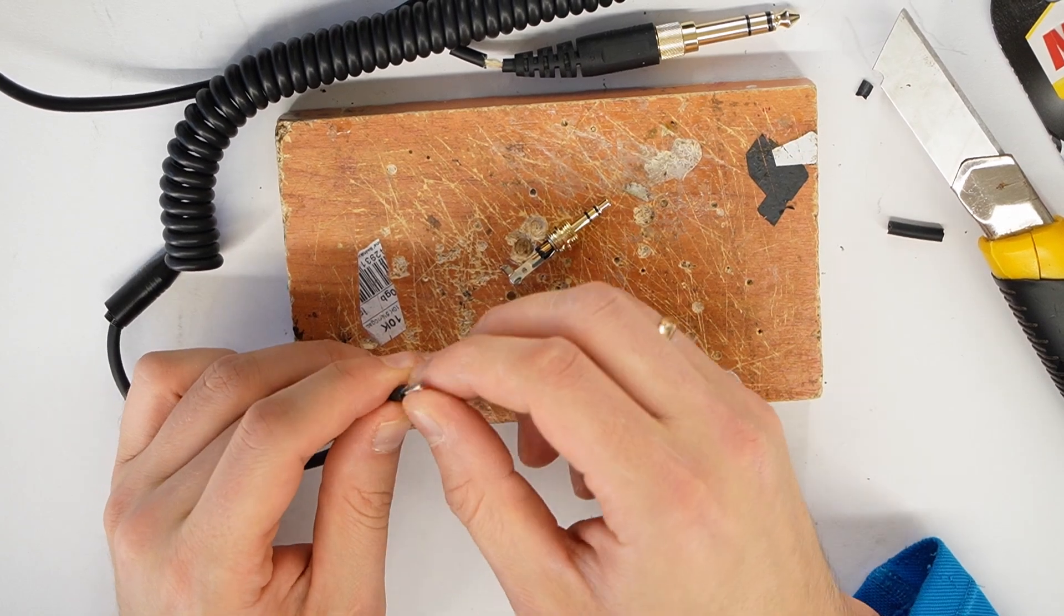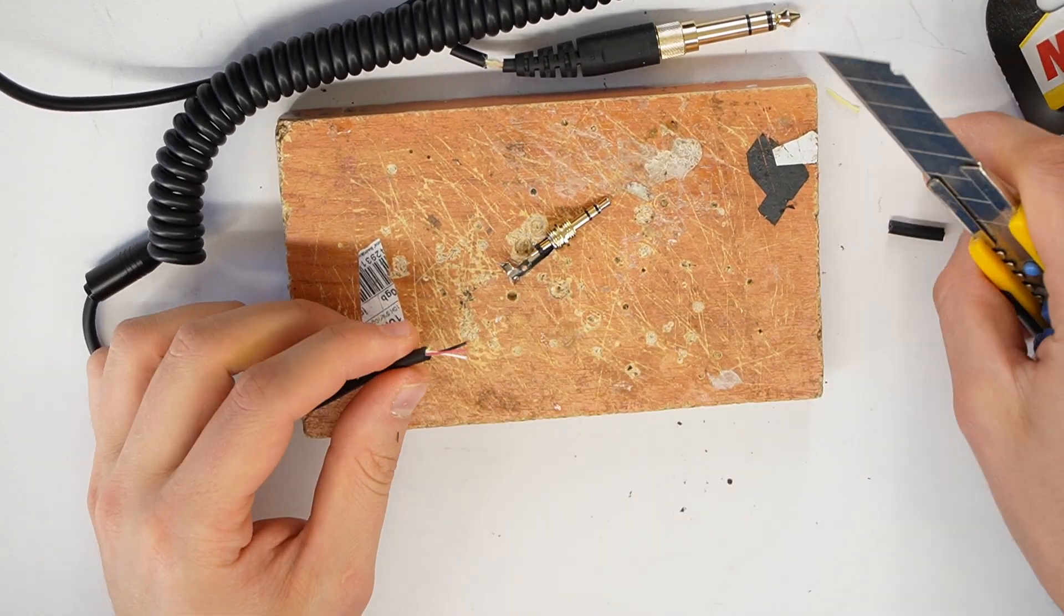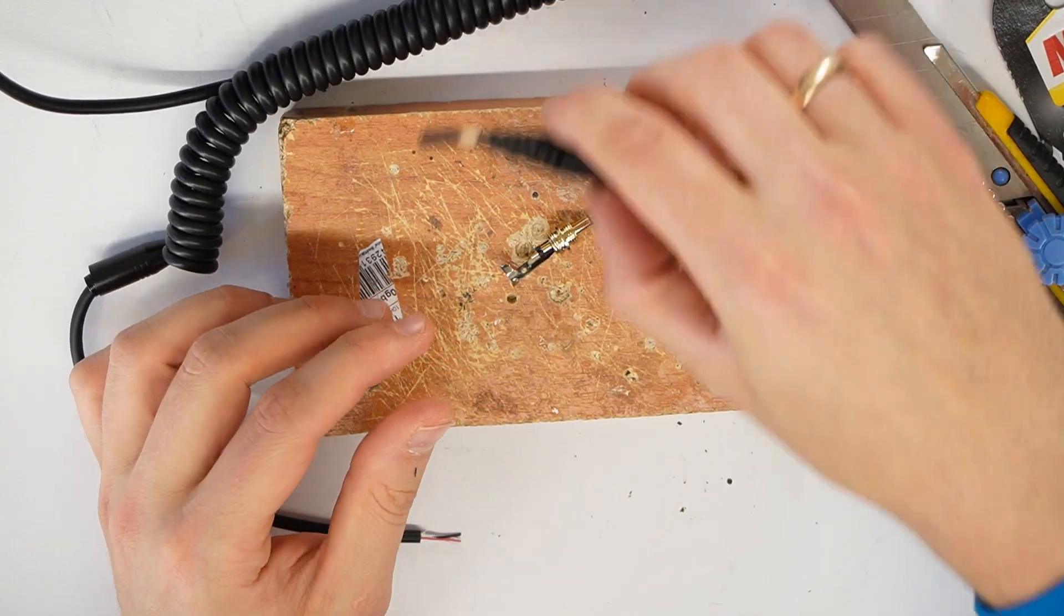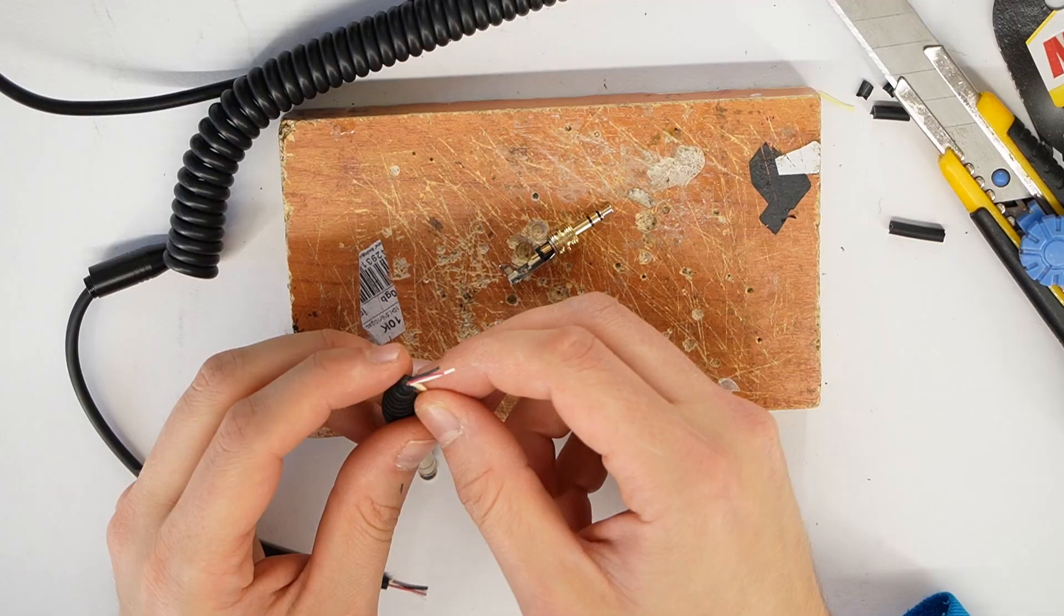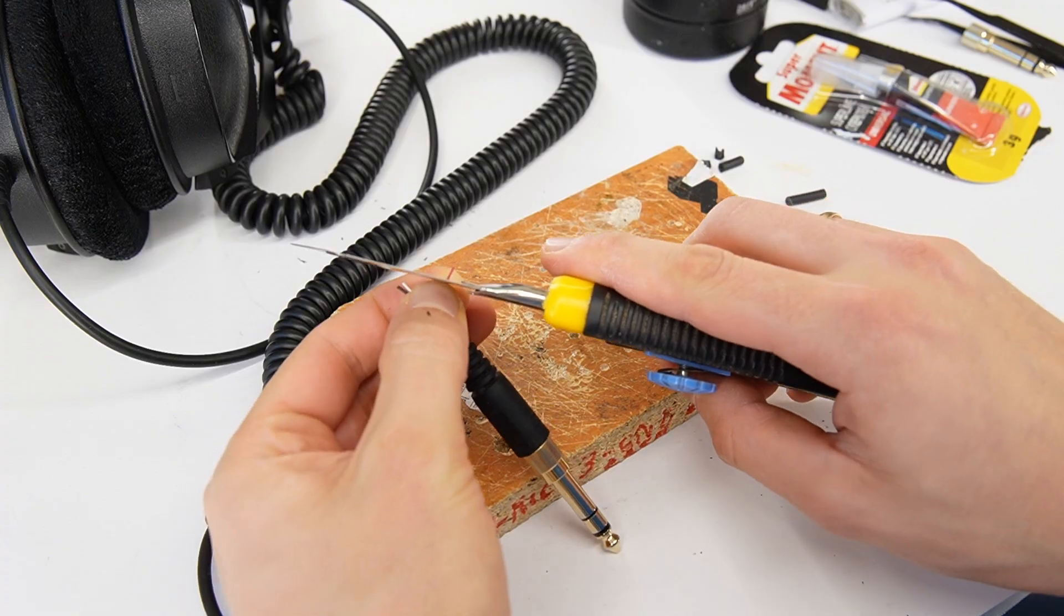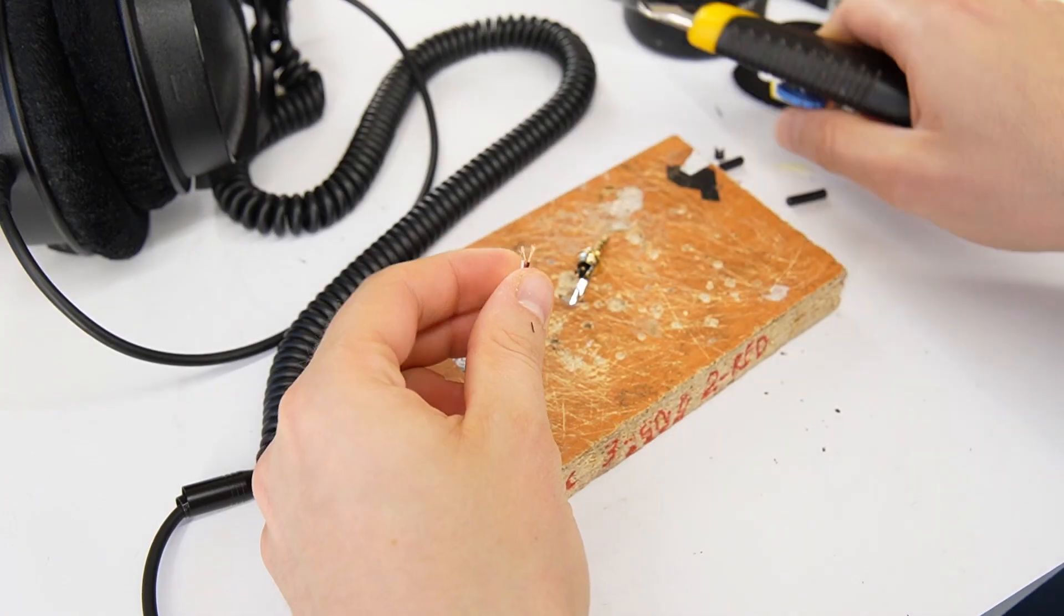Separate the wires by color and cut off the fabric threads. You won't need them. Next, do the same for the old broken jack. This will help you figure out which wire colors are for left, right, and ground. Also, cut a small piece of insulation off each wire.